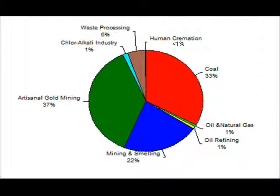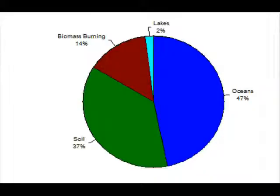The relative contributions to the atmosphere from current anthropogenic sources have also been evaluated and can be seen in this next figure. Artisanal gold mining, combustion of coal, as well as conventional mining and smelter operations account for much of these emissions. Once released, equilibrium processes in the environment lead to redistribution to various land masses that act as sources, as noted in the next figure indicating estimated atmospheric contributions from historic anthropogenic sources.